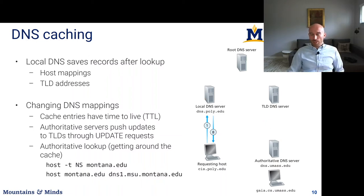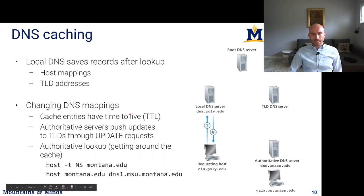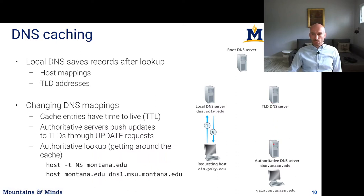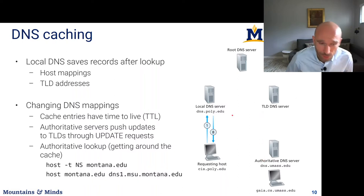The problem with caching is that you can't cache data forever — data might change. These servers might move to different IP addresses. Authoritative servers can send update requests: if gaia.cs moves to a different IP, the authoritative DNS can tell the TLD that gaia.cs has moved, updating the TLD's cache. Another mechanism is that entries cached at the local DNS server will only be cached for some amount of time and refreshed periodically — the entry will time out and the local DNS will go through the lookup process again.